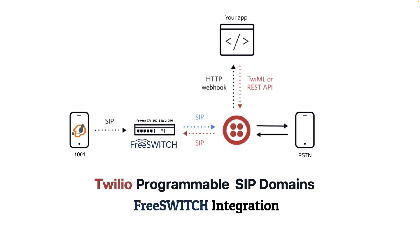Let's start by explaining our lab setup. I'm running a Debian 12 with FreeSwitch installed and configured with a basic setup on my local network. The IP address is 192.168.2.x — that is my local IP range.